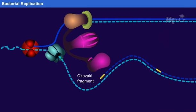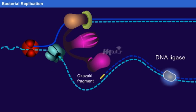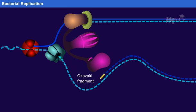Finally, the Okazaki fragments are joined together by the enzyme DNA ligase. As the bacterial chromosome is circular, the forks meet on the other side and two separate chromosomes are released.